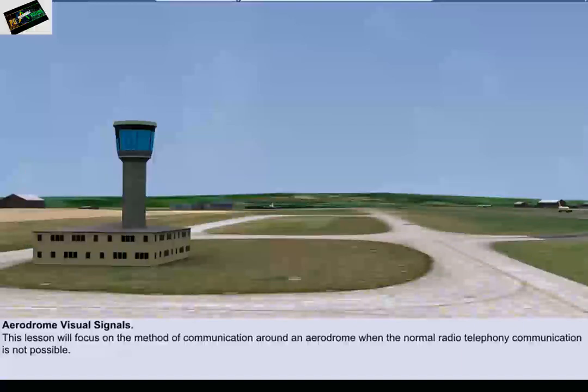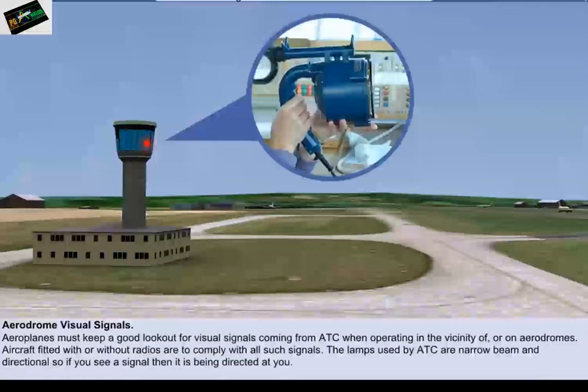The communication system that is used is visual signals in the form of coloured lighting. It is therefore essential that all aeroplanes keep a good lookout for visual signals coming from air traffic control towers when operating in the vicinity of aerodromes. The lamps used by air traffic control for visual signals are narrow beam and directional, so if you see a signal, then you can be sure that the signal is being directed at you.